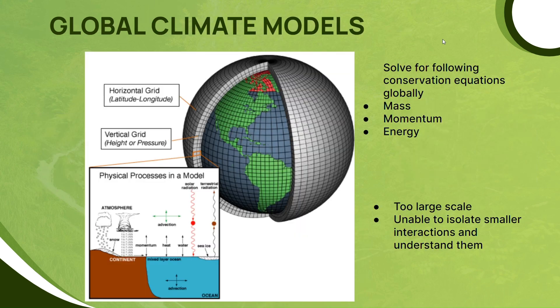Historically, climate modeling has been focused on a global scale — basically, you solve for the conservation equations globally. The issue with that is it's employed at a very large scale, and hence it's not easy to isolate smaller subsystem interactions and understand them.